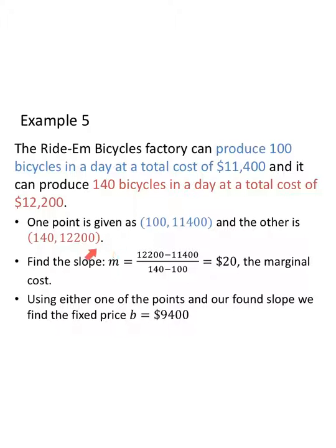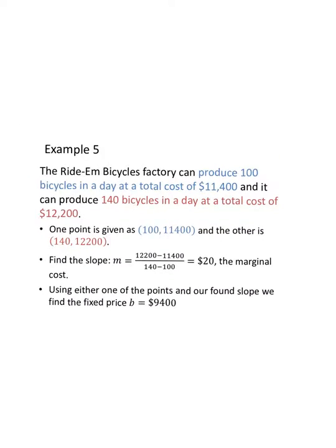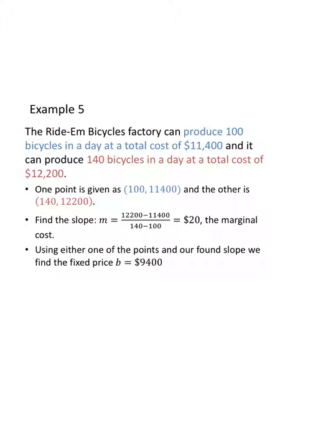Once I have two points, I want to find the slope. I'm going to take $12,200 minus $11,400, and I'm going to divide that by subtracting in the same order, 140 minus 100. This looks like $800 over 40, which simplifies to $20. And that's my marginal cost. Using either one of the fixed points in our found slope, we can find the fixed price to be $9,400. But I know you would kind of like to see that happen. So let's make that happen.